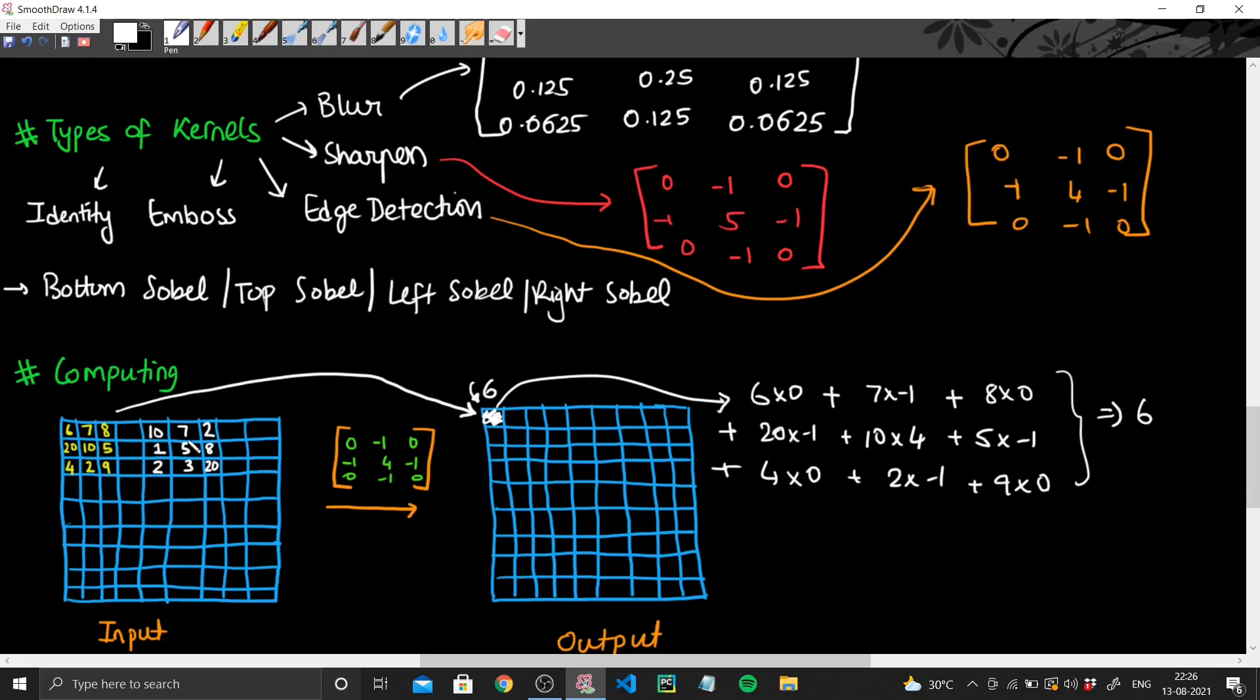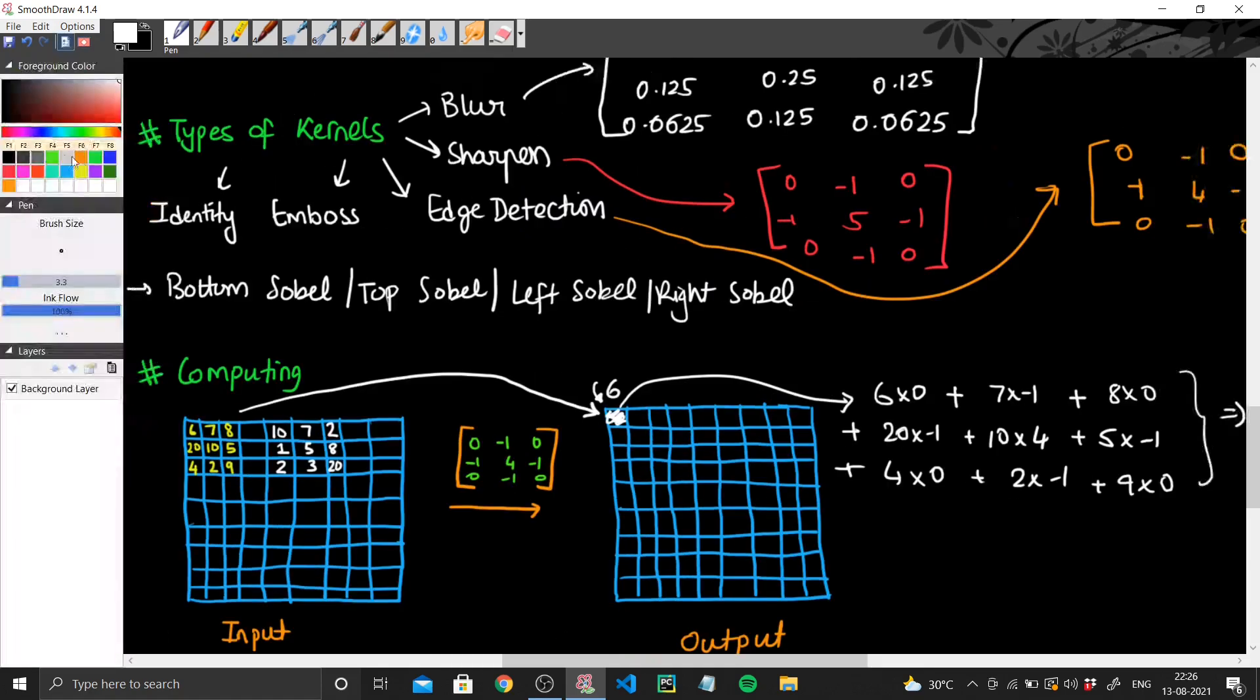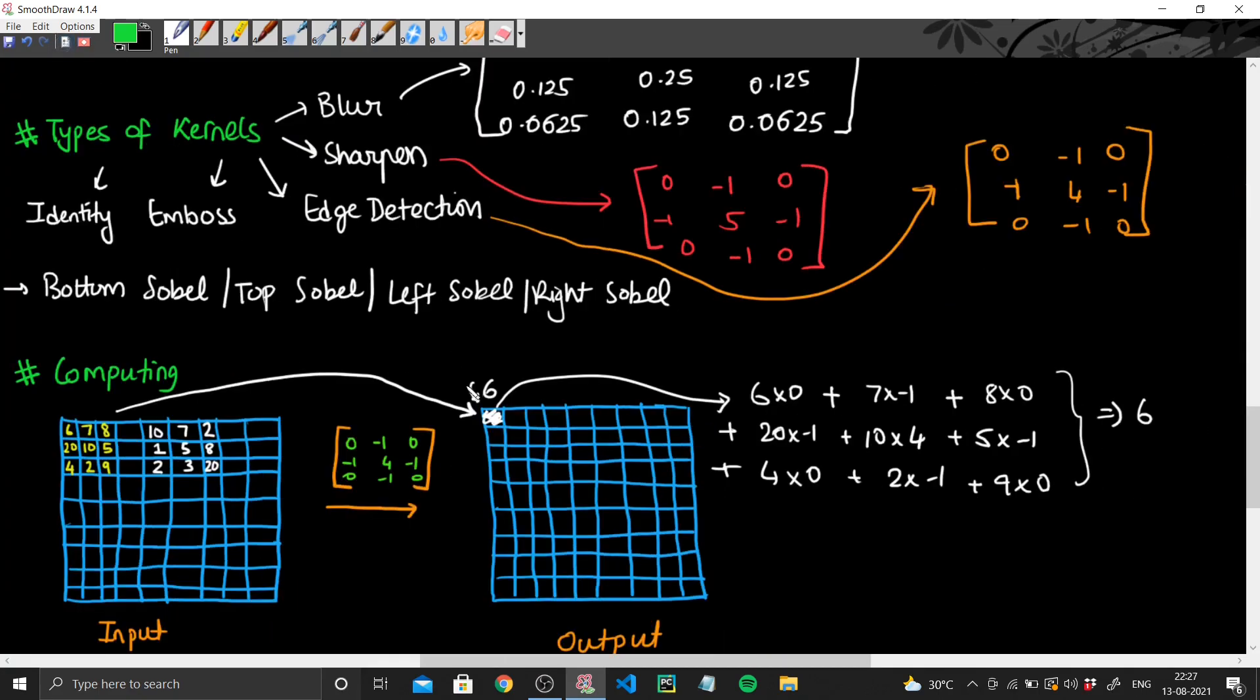So for this particular different matrix, say this one, we that will correspond to the pixel number 5 and this one. So we are finding the value of this pixel now.